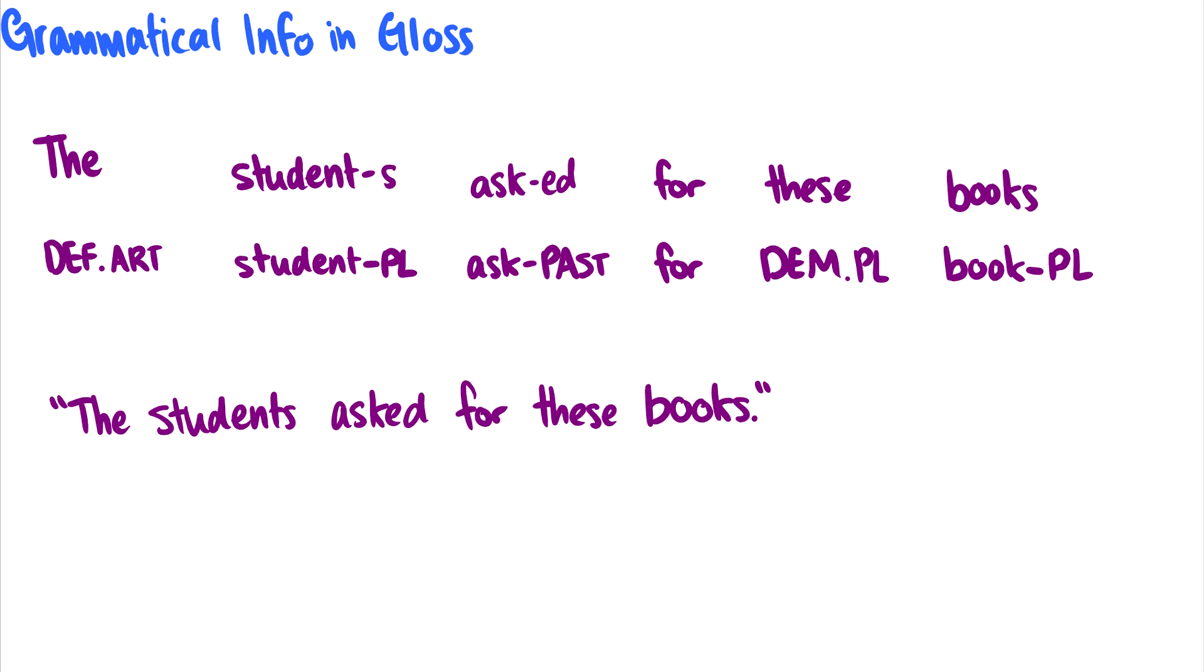Okay, but it's also useful if you're just looking at a language you know. So here's the students asked for these books. Okay, so why would we need a gloss for English? Well, we can break it up into morphemes and be more specific. So the is a definite article. Other languages have definite articles. And if we use def.art for all definite articles across all languages, then we have this common language that we can understand. So don't think of the as the, think of the as being a definite article. Definite article would be the, an indefinite article would be something like a or an.